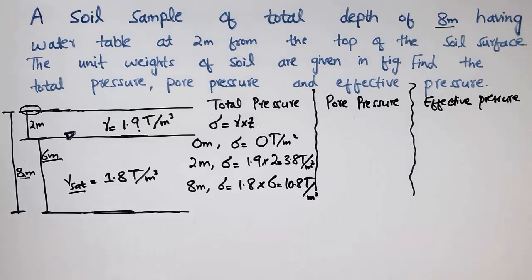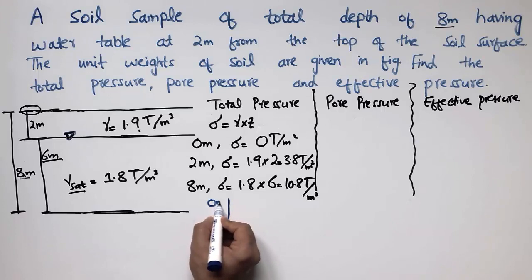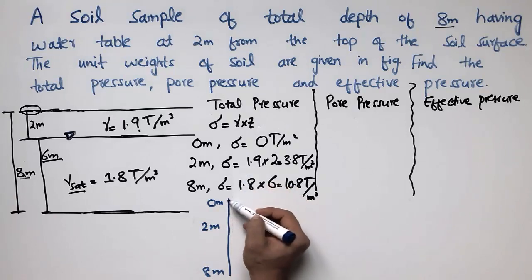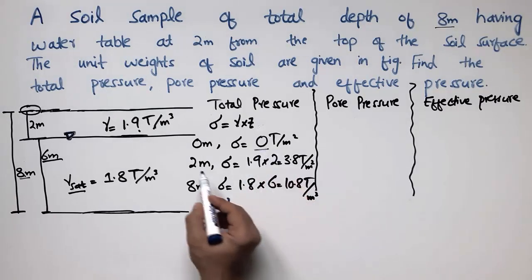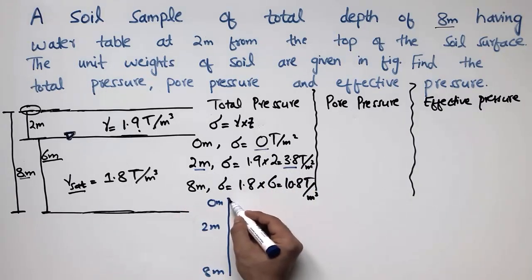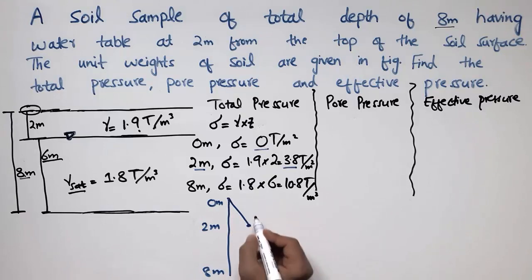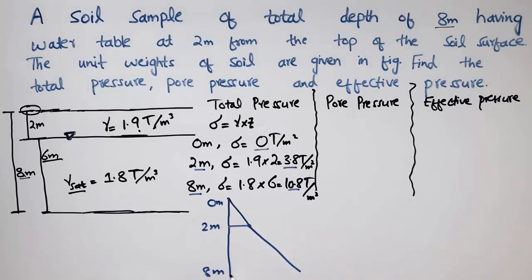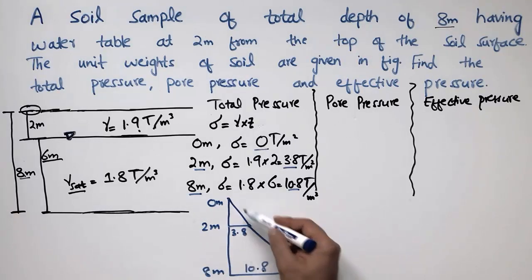To show the total pressure profile: at 0 meters the stress is 0, at 2 meters it is 3.8 ton per square meter, and at 8 meters it is 10.8 ton per square meter. The total pressure increases linearly with depth, giving us the total pressure distribution over the depth of the soil.